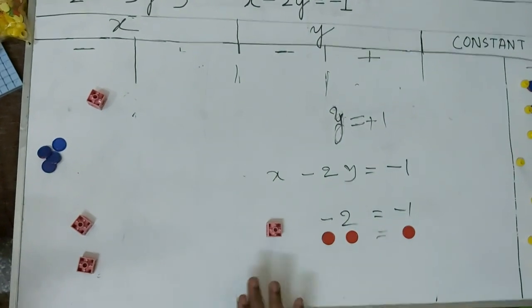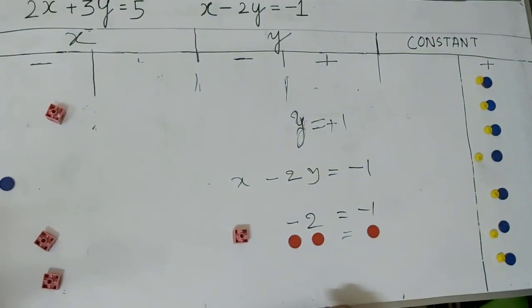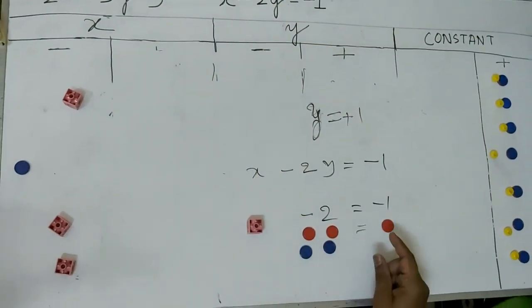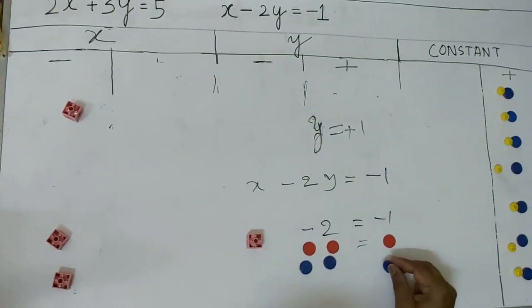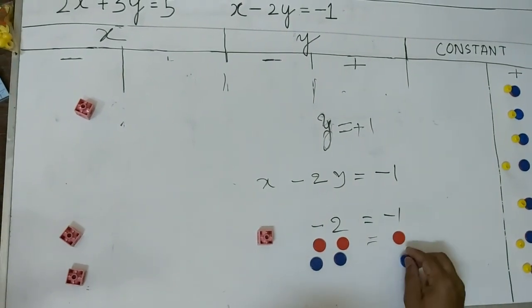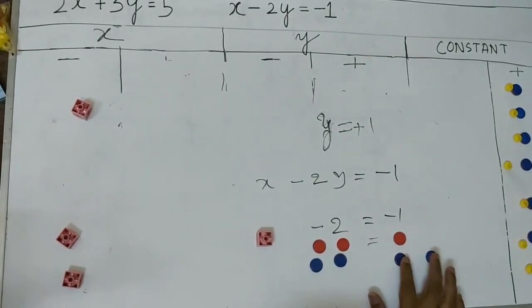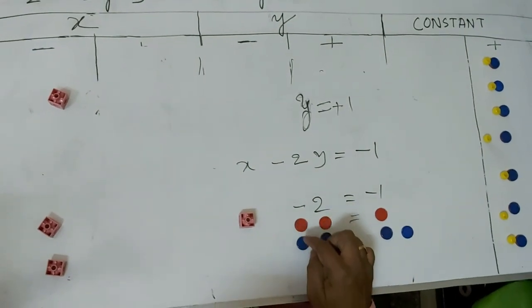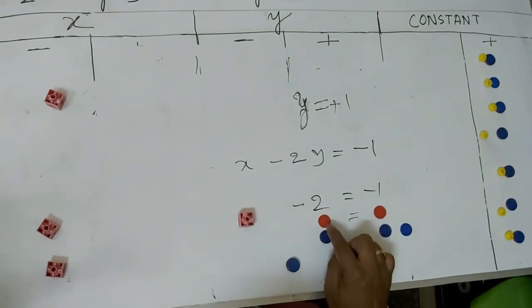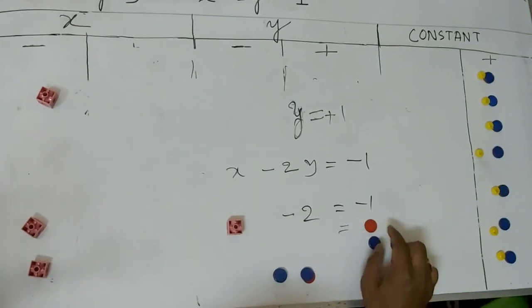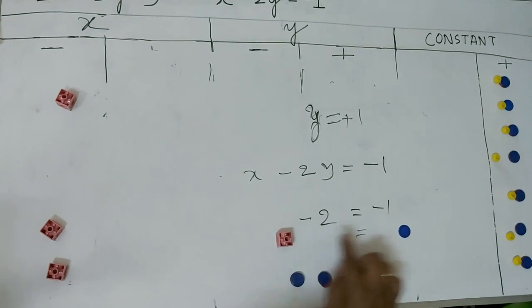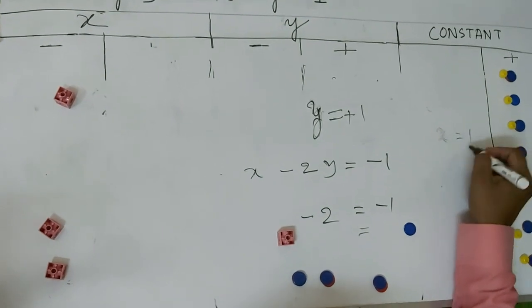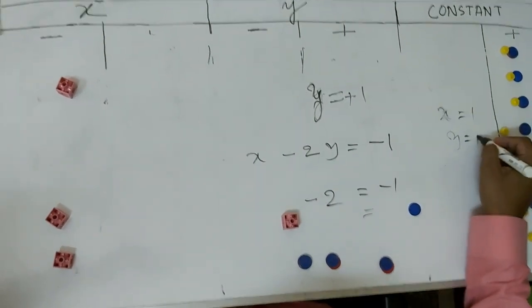To find x, we need to cancel the minus 2 by adding plus 2 to both sides. I add two blue coins on the left side and two blue coins on the right side. Each minus 1 plus 1 pair has net value zero, so the minus 2 cancels out. What is left over is x equal to 1. Through this activity we got x equal to 1 and y equal to 1.